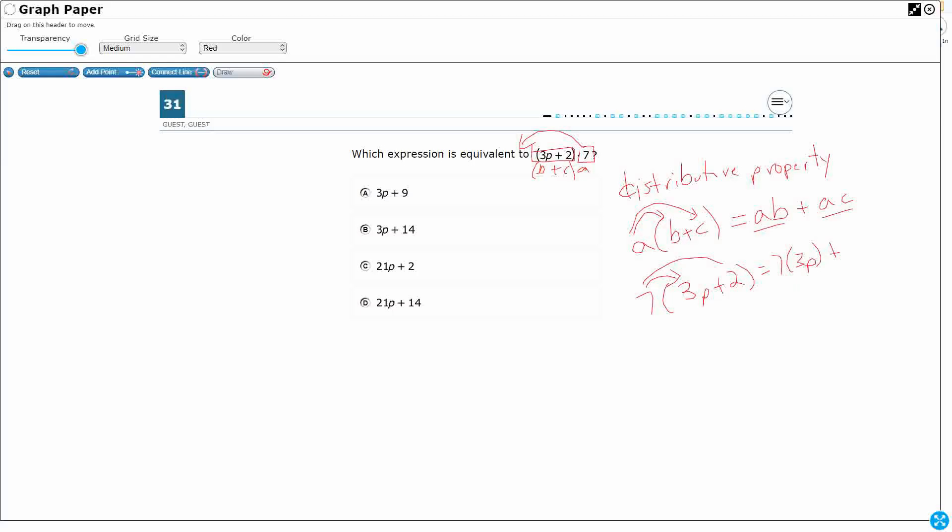So that's 7, remember that's my a, times 2. So that's the distributive property at work.